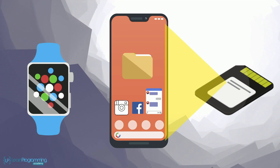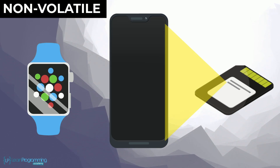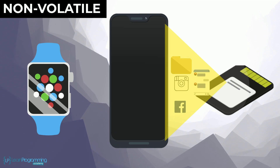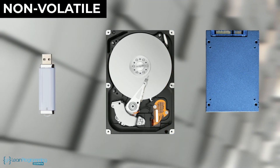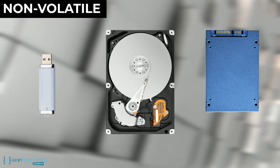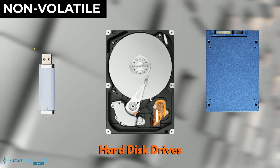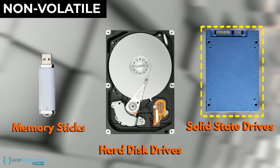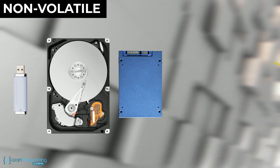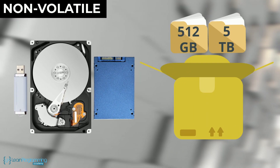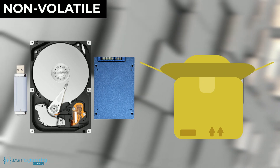The storage type of memory is non-volatile, meaning that when the power is turned off, the data and software programs and apps remain held in that type of memory. A few examples of this non-volatile memory used for retaining data, software programs and apps over time are hard disk drives, memory sticks, and solid state drives, also known as SSDs. These devices are designed to hold large amounts — gigabytes or even terabytes — of data, software programs and apps.